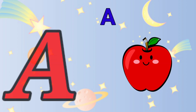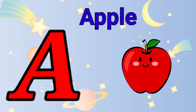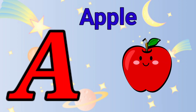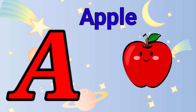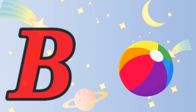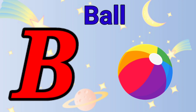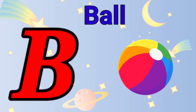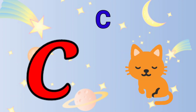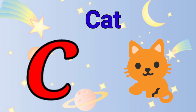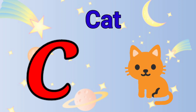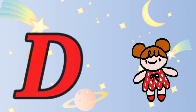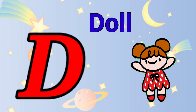A is for apple, a-a-apple. B is for ball, b-b-ball. Z is for cat, c-c-cat. D is for doll, d-d-doll.